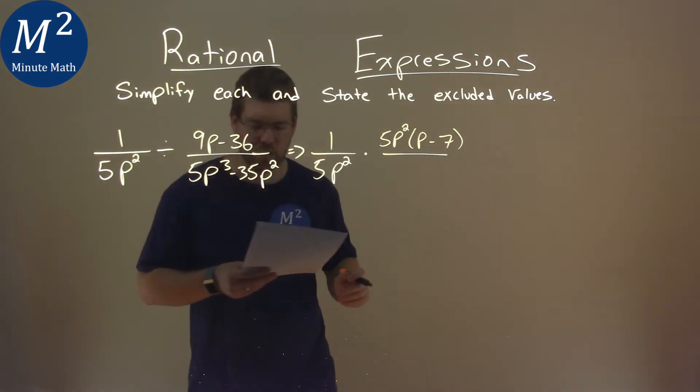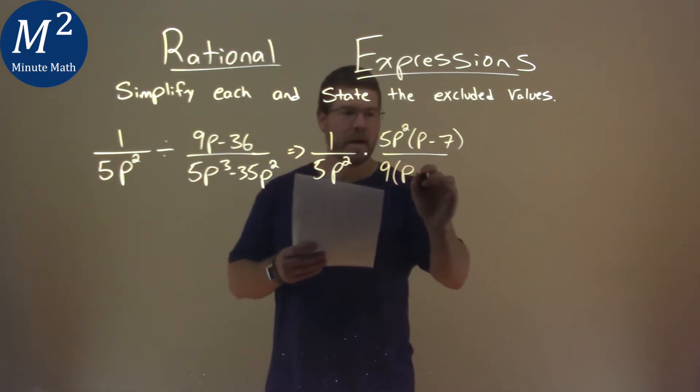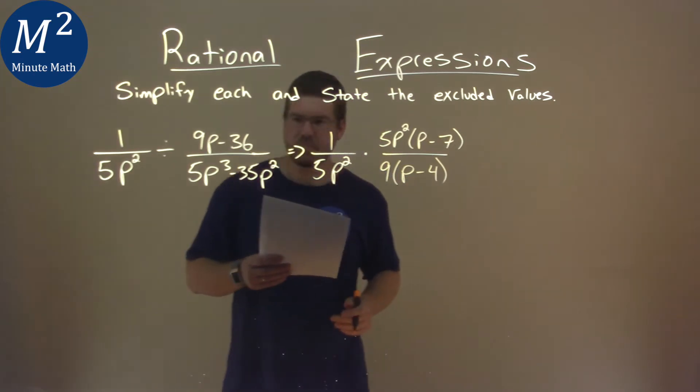The same thing here is, I'm going to pull out a 9. If I pull out a 9, I'm left with a p minus 4, right there.